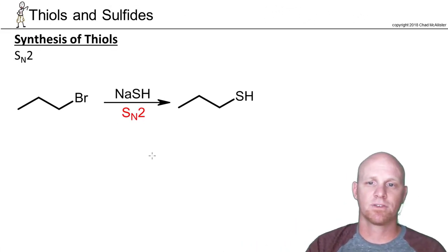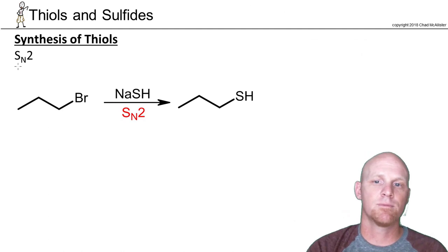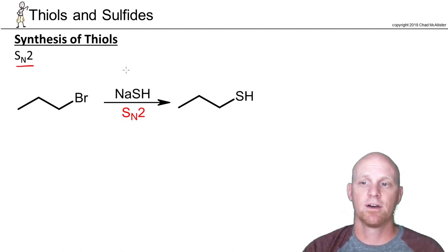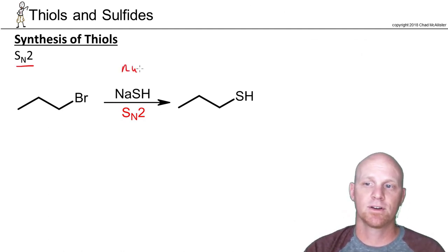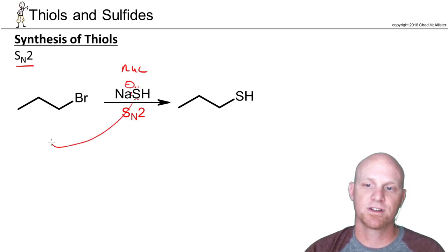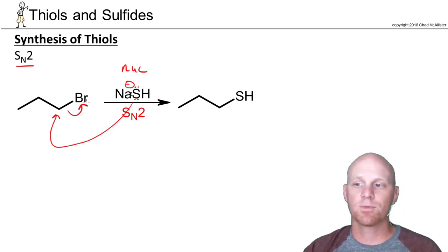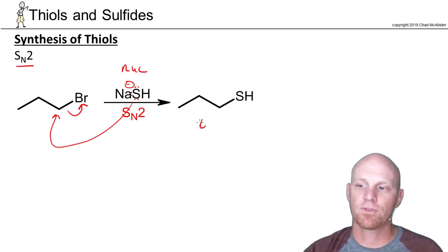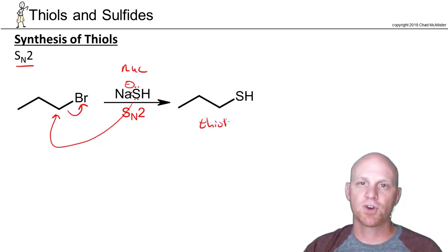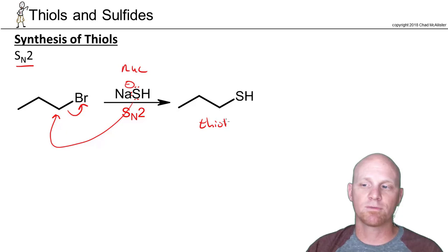For the synthesis of thiols, we make them via SN2 reactions — this is total review. The key is that SH⁻ has to be your nucleophile. It simply comes in and does backside attack, kicks off the leaving group, and now you've got your thiol. Total review — I don't want to spend a lot of time on this.